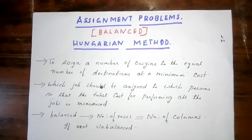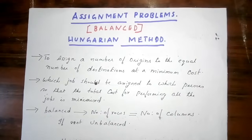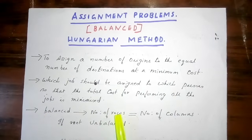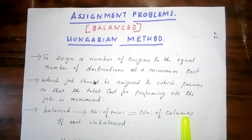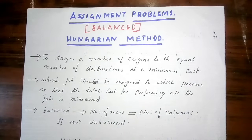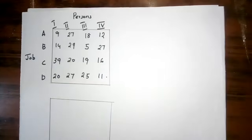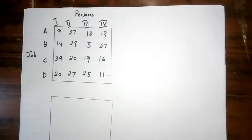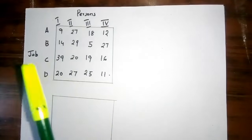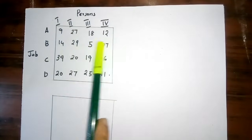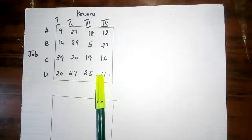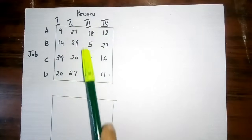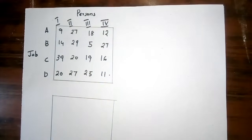Assignment problems are balanced, meaning the number of rows is equal to the number of columns. This assignment problem is balanced. For example, in this table there are 4 rows and 4 columns, so this is a balanced assignment problem.